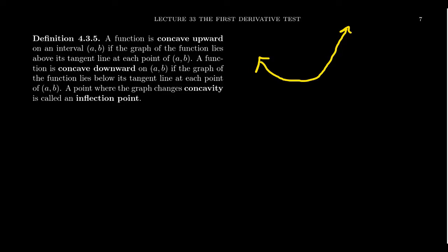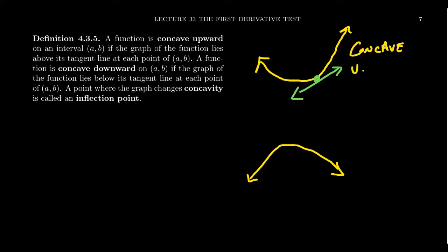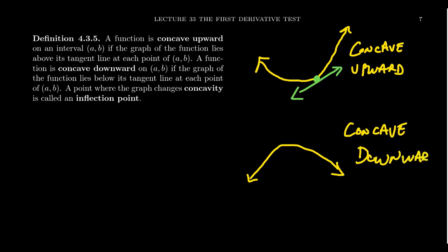If your function is curving upward — concave upward — then the tangent line is actually below the function. On the other hand, if you are concave downward on the interval a to b, then that occurs if the tangent line is above the function. The usual idea we have for concave down would look something like this — this is our concave upward, and this is an example of our concave downward.